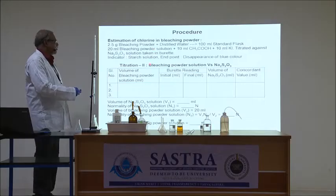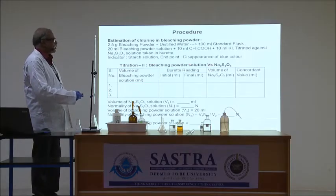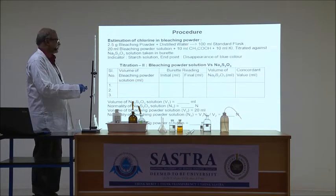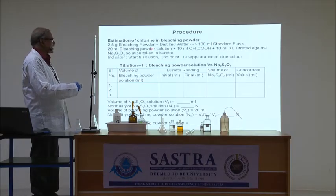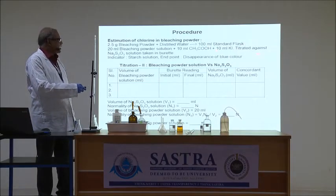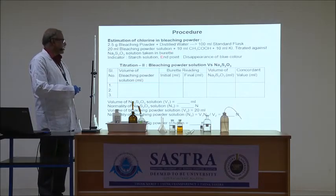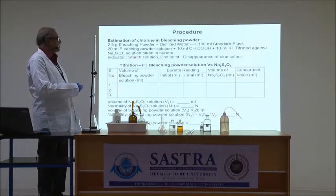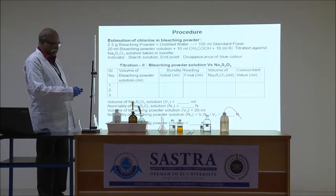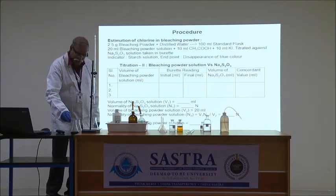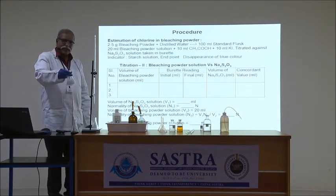The second titration is bleaching water solution versus sodium thiosulfate solution. A weighed amount of bleaching water is dissolved in a 100 mL standard flask. From this, 20 mL of the bleaching water solution is taken in a conical flask. Dilute acetic acid and potassium iodide solution are added. The solution is titrated against sodium thiosulfate solution. When the solution becomes pale iodine color, starch indicator is added, giving a blue color. The titration continues until the endpoint, which is the disappearance of the blue color.